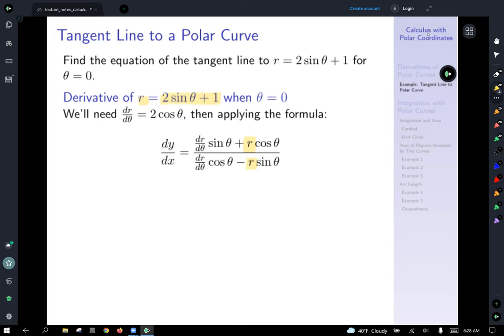What we need is we need to calculate dr d theta. Well, calculating dr d theta, we see that the derivative of two sine of theta with respect to theta is two cosine of theta, and the derivative of one with respect to theta is plus zero. So it's just two cosine of theta, and that will go in for this expression.